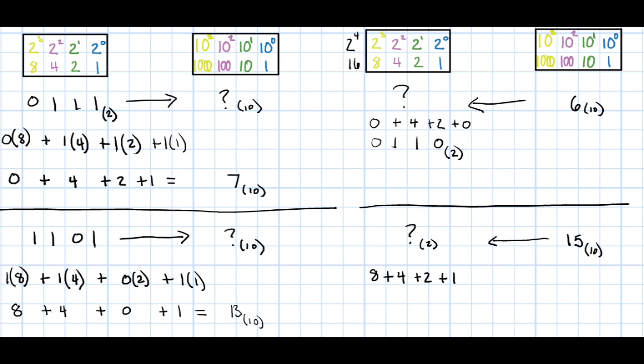We will fill in the binary weights by asking ourselves if we used that place. We used the 8's place, so we fill in a 1. We used the 4's place, so it gets a 1. We used the 2's place, so it gets a 1. And we used the 1's place, so it gets a 1. The decimal number 15 is 1111 in binary.